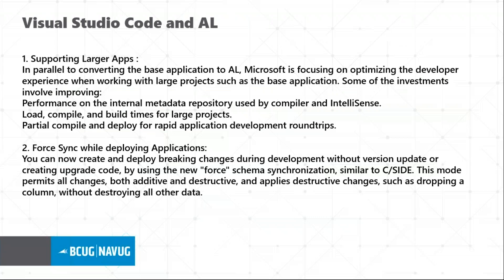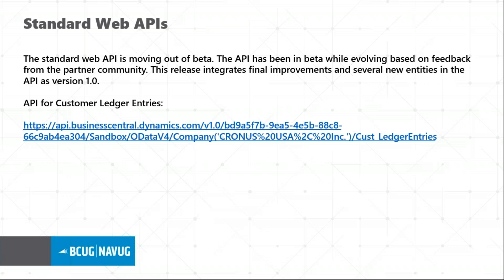Two important Visual Studio Code enhancements: first, supporting larger apps; second, force sync — previously after deleting a record field on a table in Business Central, to redeploy the app you had to change the app ID and app name. Now all you have to do is force sync and the schema synchronizes automatically. Also, standard web APIs have officially moved from beta to API version 1, and Microsoft has added a few more APIs — one example is customer ledger entries.